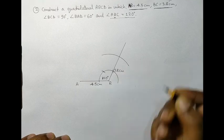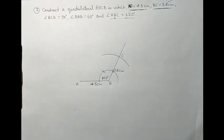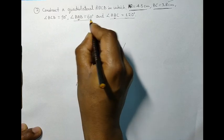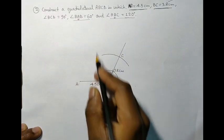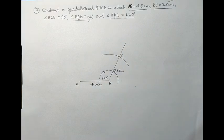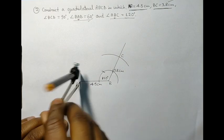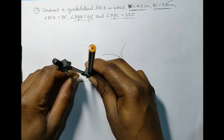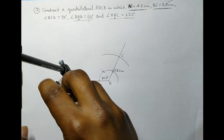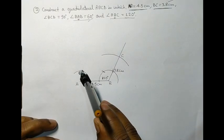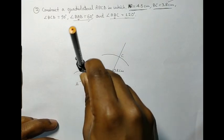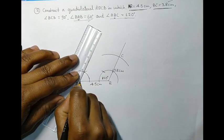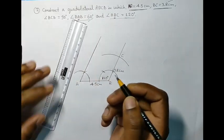So, we will simply write 3.8 cm. Now, we have the other two angles, that is, BAD and BCD. So, we have A at the base, so we can construct 60 degree, angle BAD. So, here we have our 60 degree, we will simply draw a line going through the point.